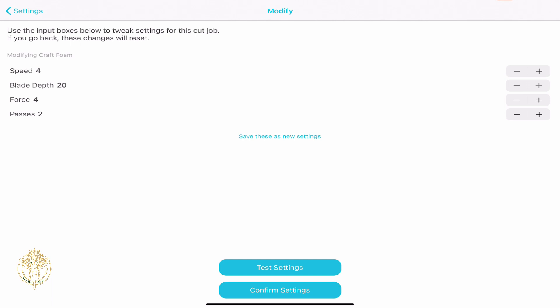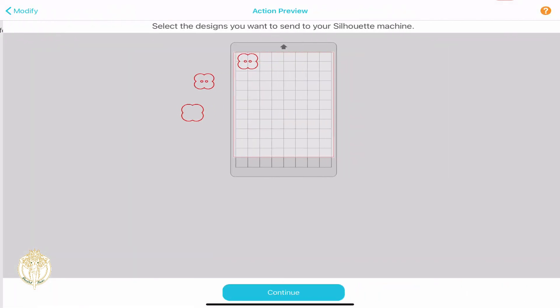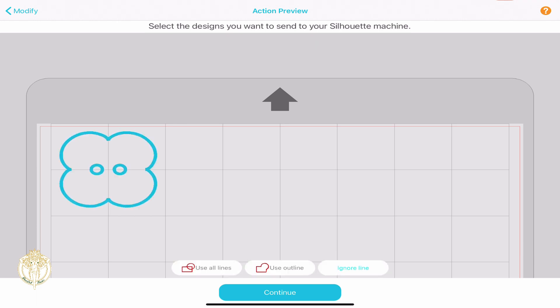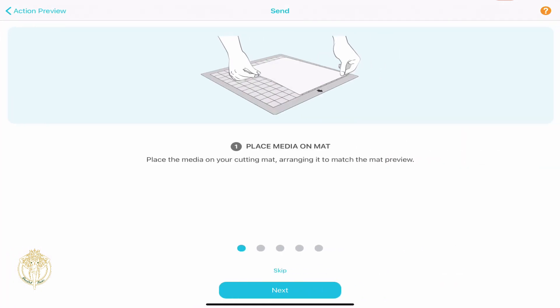This particular material, craft foam, requires the blade to be at a blade depth of 20. These are manual blades so you do have to manually twist it to the blade depth of 20. Now we need to make sure we're correctly selecting what the machine should physically cut. I want all of this on the screen to cut so I'm going to click it and then do use all lines. If you just want the outline you can do that, or the third option is to ignore lines. I want to use all lines so I'll click that and then continue.